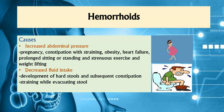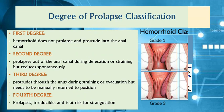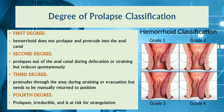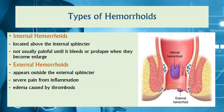Hemorrhoids are classified according to degree of prolapse from first degree to fourth degree, varying in terms of site, stability, ability to be reduced, and extent of prolapse. According to location, we have internal and external hemorrhoids. Internal hemorrhoids are located above the internal sphincter, while external hemorrhoids appear outside the external sphincter. Internal hemorrhoids are not usually painful, compared to external hemorrhoids, which are very painful.